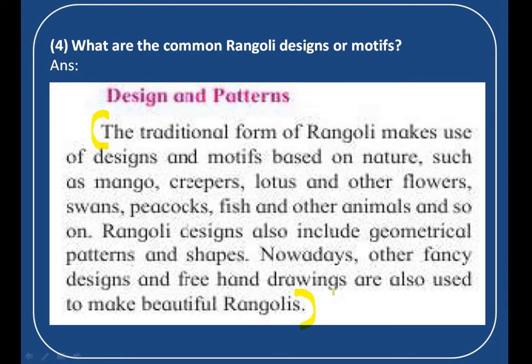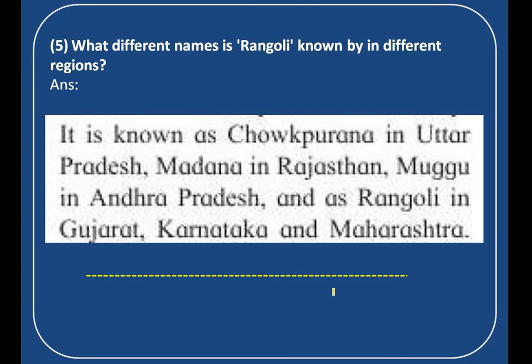The last question: What different names is Rangoli known by in different regions? This answer is on page 81. Rangoli is known as Chaukpurna in Uttar Pradesh, Madana in Rajasthan, Mughu in Andhra Pradesh, and as Rangoli in Gujarat, Karnataka and Maharashtra. In Bengal, Rangoli is known as Alpana. Whereas in Bihar and Uttaranchal, it is named Aipana. Kolam is the name given to the art of Rangoli in southern parts of the country, mainly in the states of Kerala and Tamil Nadu. Write this answer also in points.